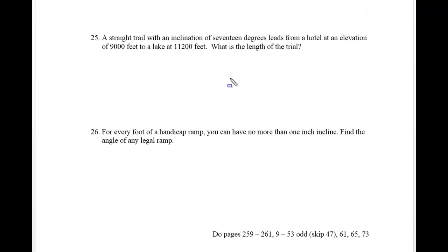All right. So let's go take it beyond to these last two problems here. It says a straight trail with an inclination of 17 degrees leads from a hotel at an elevation of 9,000 feet to a lake at 11,200 feet. So we're already up way high into the air and we've got this trail that has a 17 degree incline.